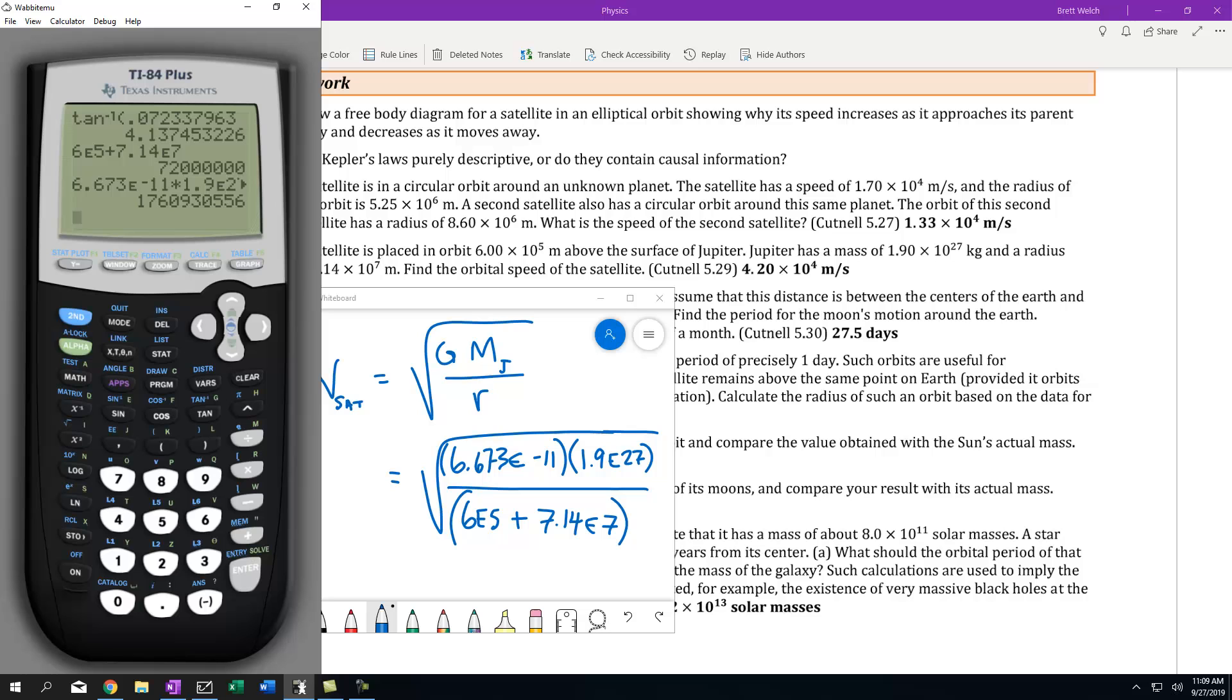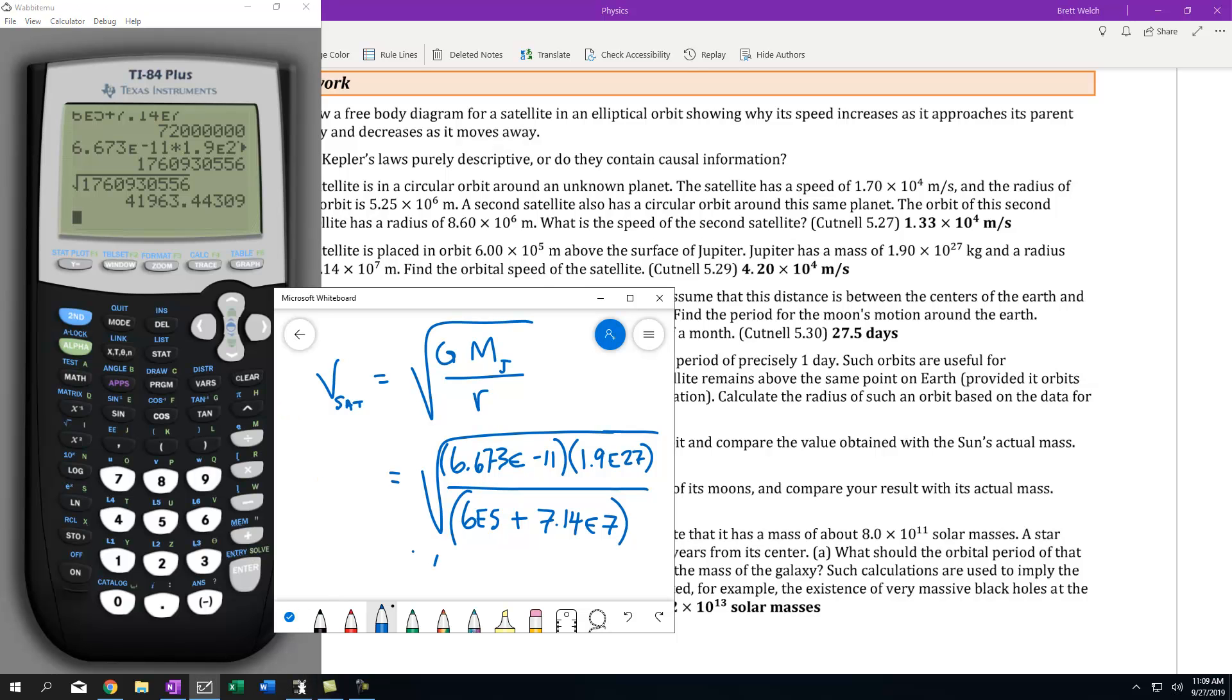Now, that has not been square-rooted yet, so I'm going to square root that previous number to get 41,963 meters per second.